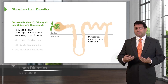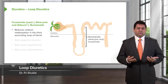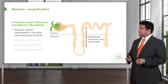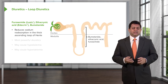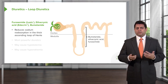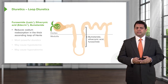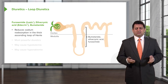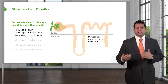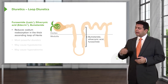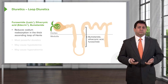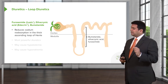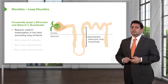The loop diuretics are very powerful diuretics. The prototypical drug is furosemide, sold as Lasix all over the world. One of the newer loop diuretics is ethacrynic acid. Ethacrynic acid is often used when people have an allergy to furosemide. There is another loop diuretic called bumetanide, used if you have allergies to the other two medications. Loop diuretics work by reducing sodium reabsorption in the thick ascending loop of Henle — that's a good exam question.